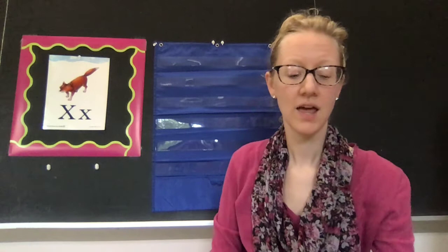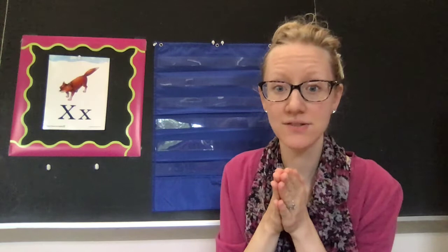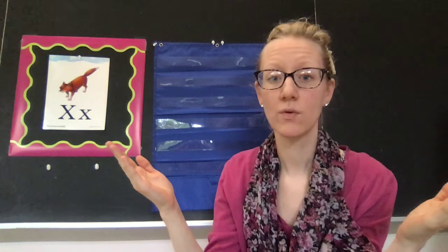The sound for X is another one of our borrower sounds. It doesn't have its own sound. It takes two sounds and puts them together to make the sound for X. The sounds it will use are the sound for K and the sound for S. When you put those together, you get K, S, K, S.